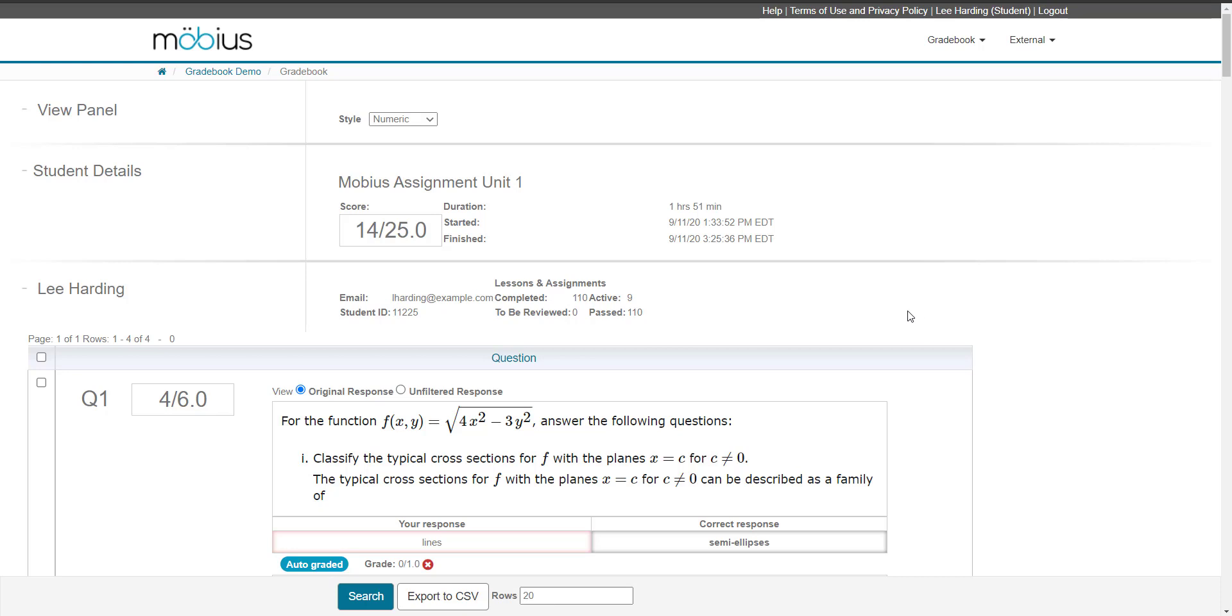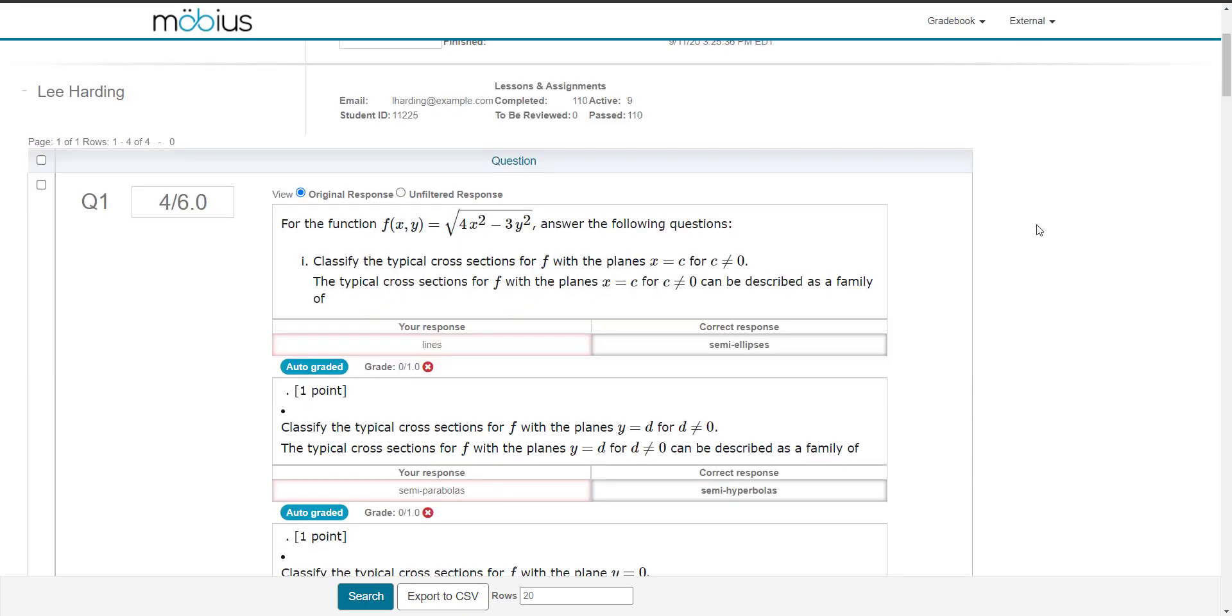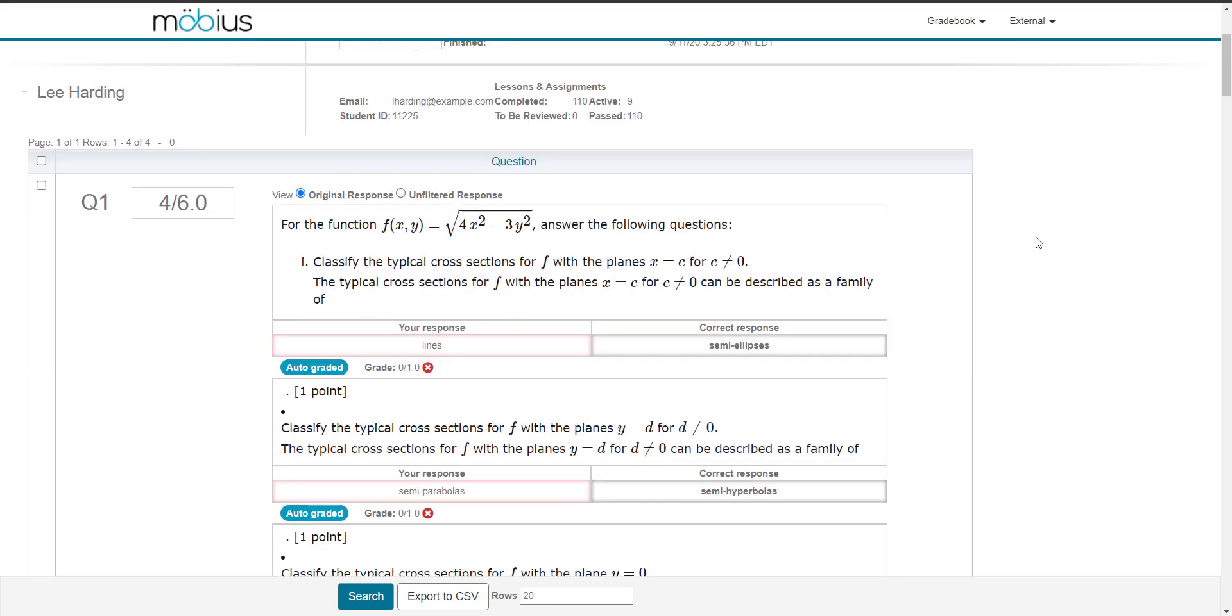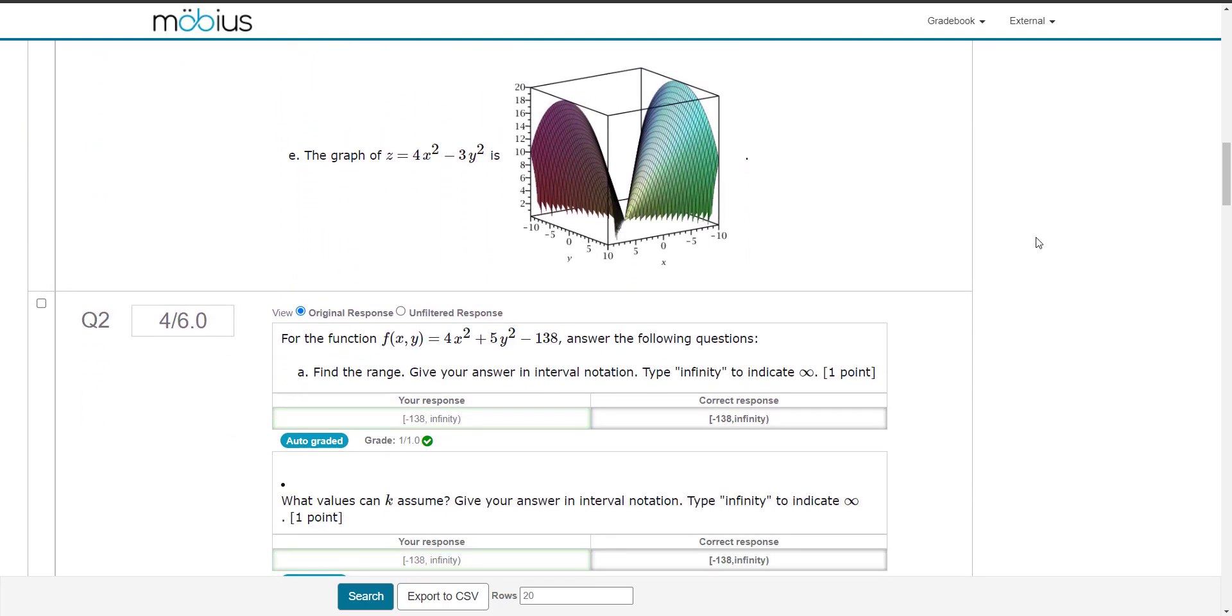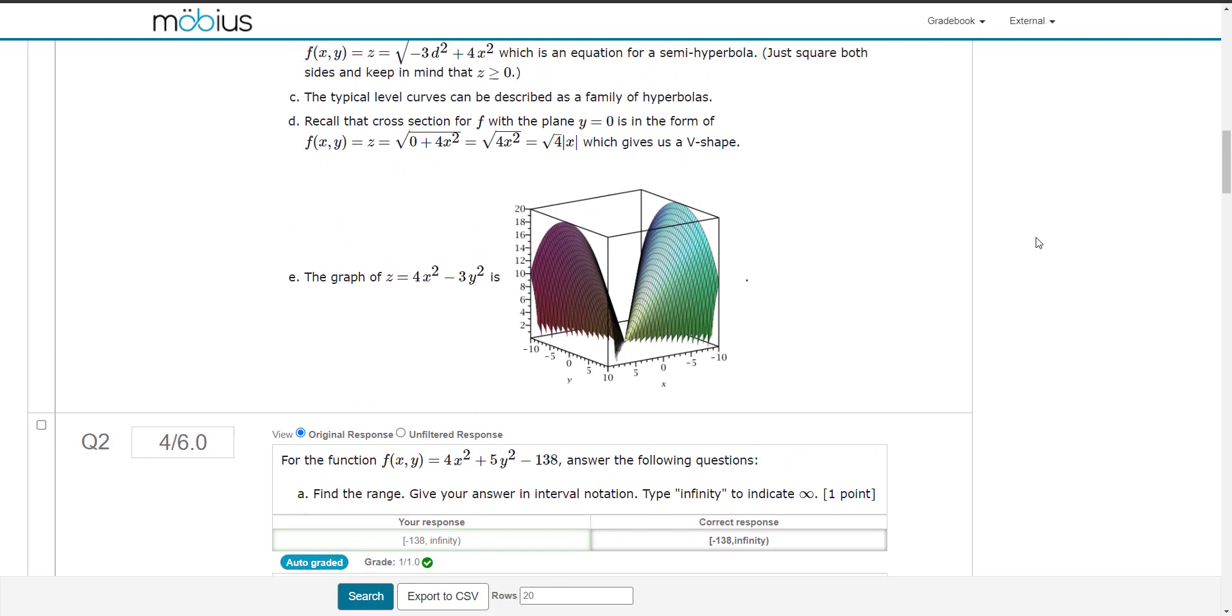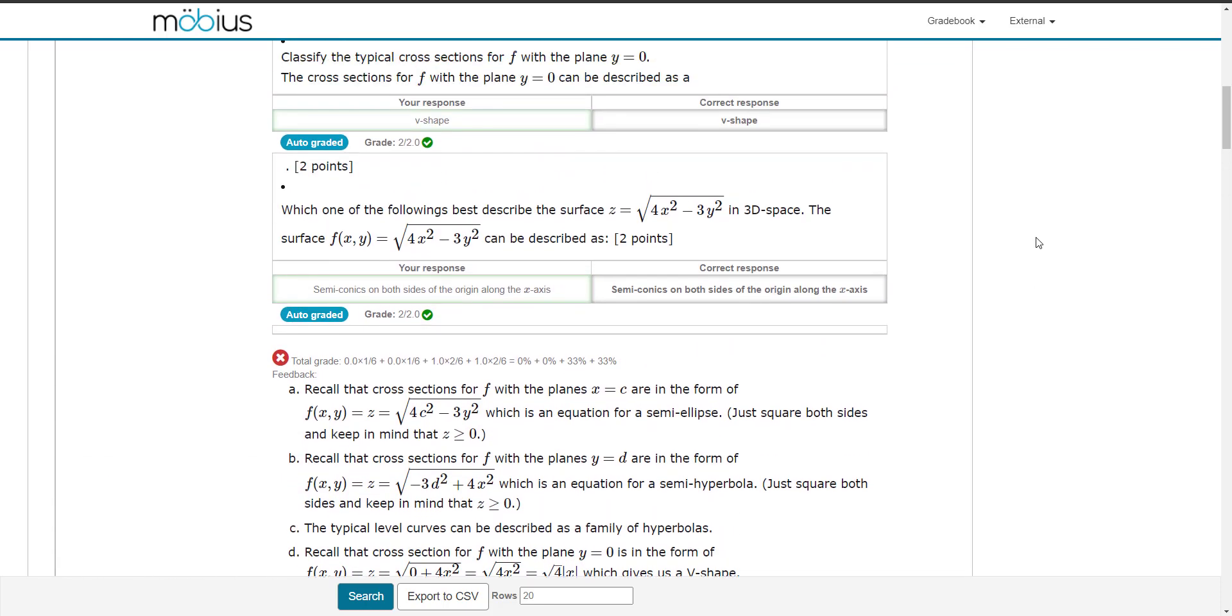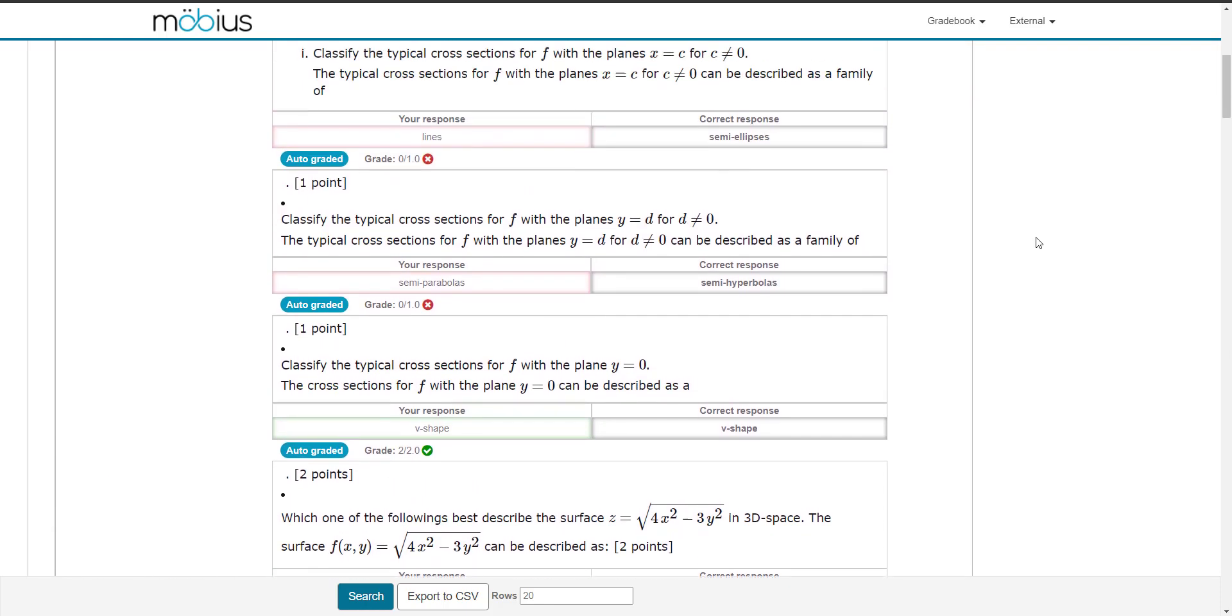Below these three panes are then the question panes. Each question in the activity is contained within its own pane. So I can see question one. If I keep going, I'll then see a pane for question two. I'm going to scroll back up to question one and I'll walk you through what's contained in this question pane.